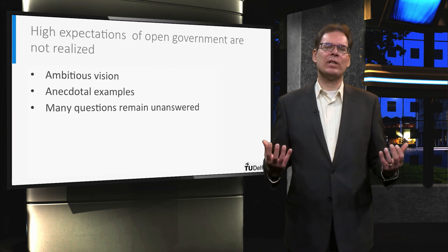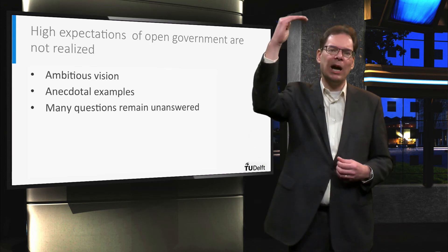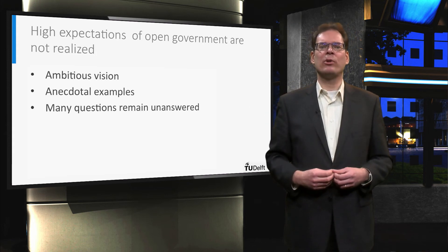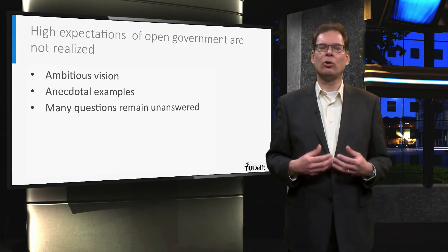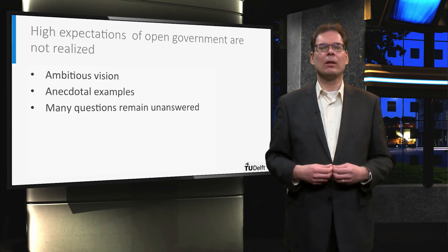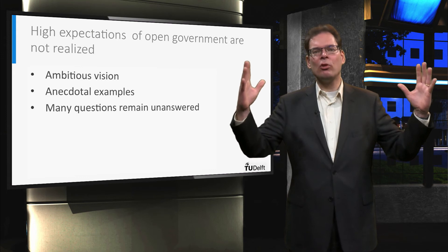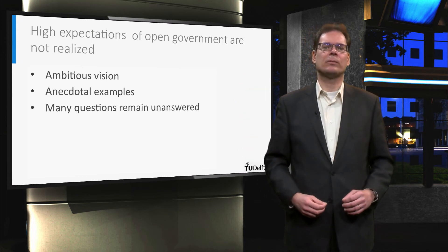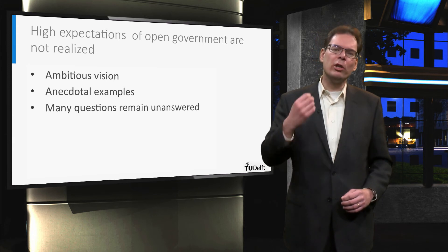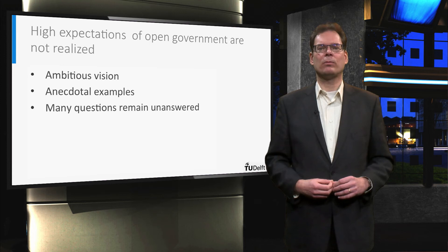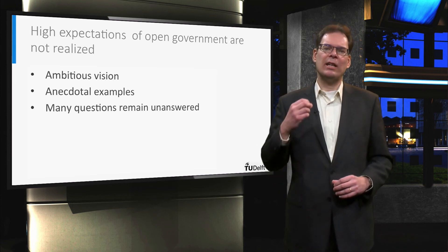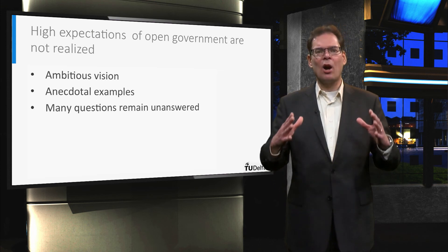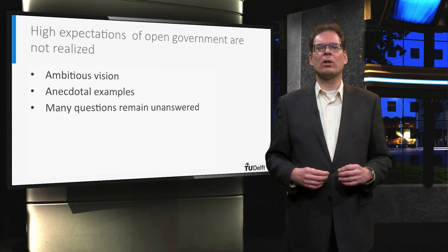The expectations that open government will contribute to a better democratic system are very high. Proponents argue that this openness can be realized and typically give anecdotal examples of successful applications, such as making budget information available. Nevertheless, the broader vision of creating an open government is much more difficult to realize. Do you know how much money is spent on safety in your neighborhood? Do you know the policy to maintain the roads in your area? Do you know how many times your personal data is stored in and accessed through government databases? These are basic questions, but there are many more that we can ask.